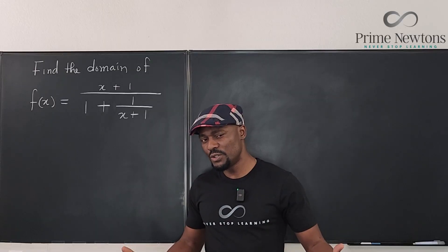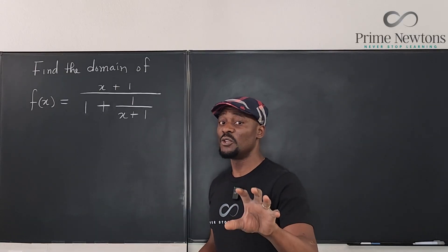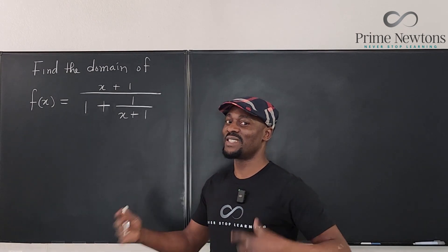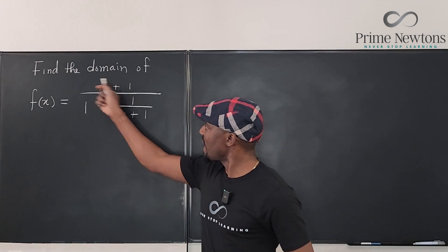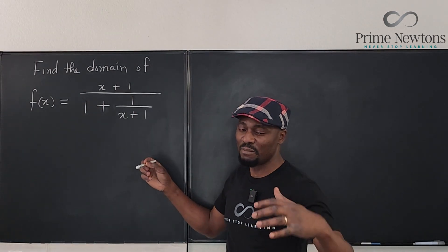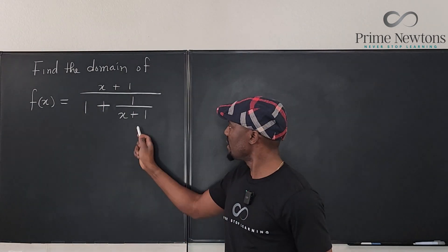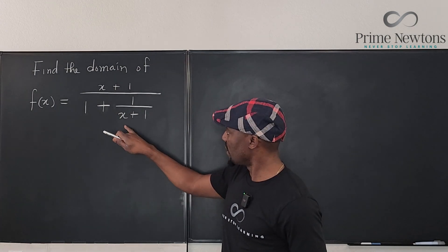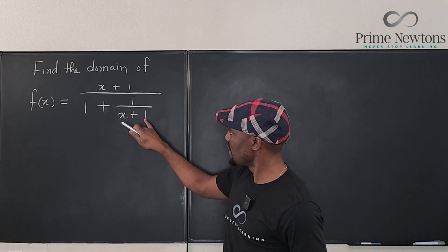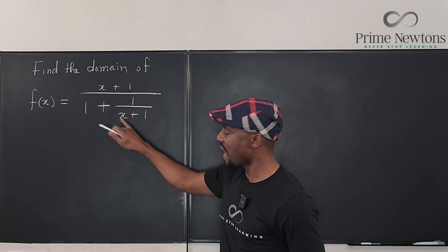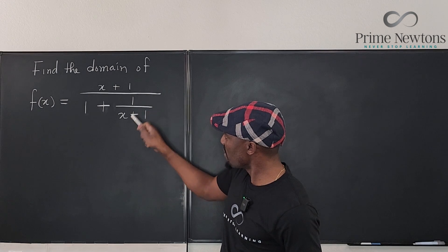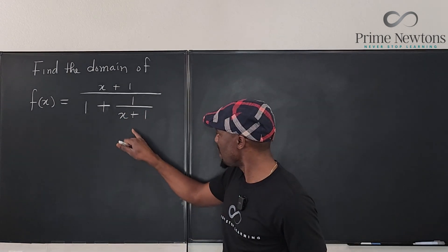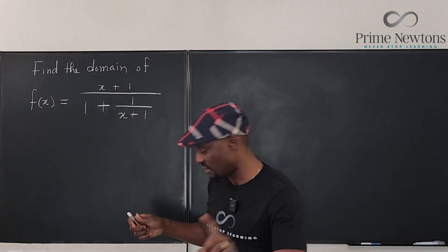So this is what you do whenever you see a function and you're asked to find the domain, especially a rational function. That's usually the one that causes trouble. Just look at the fraction and look at the bottom most part. This is the bottom most part of this function. You have x plus 1 being the denominator of a fraction within a fraction. You want to make sure that this is not 0. So the first move you make is you say that x plus 1 cannot be 0.